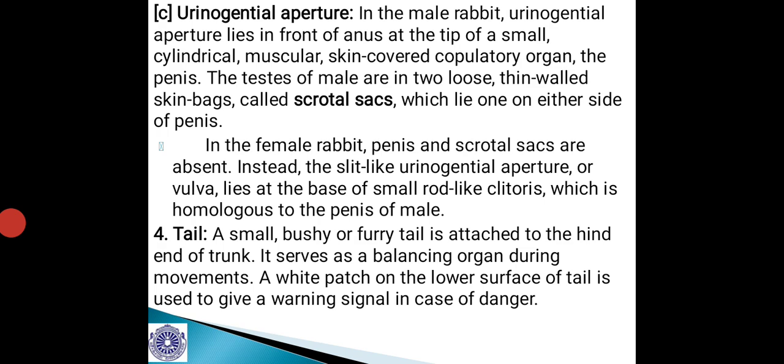A small bushy or furry tail is attached to the hind end of the trunk. It serves as a balancing organ during movement. A white patch on the lower surface of the tail is used to give a warning signal in case of danger — when threatened by an enemy, the rabbit raises its tail to advertise that white spot.